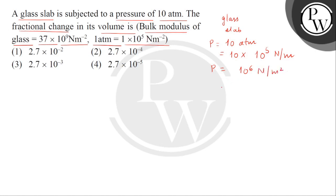Now, given to us is the bulk modulus B value for the glass, 37 multiplied by 10 to the power 9 newton per meter square. And we need to find the fractional change in the volume.